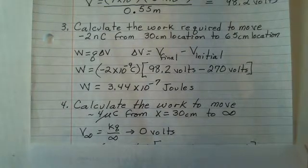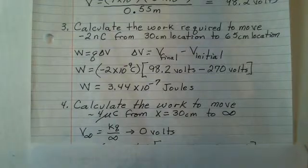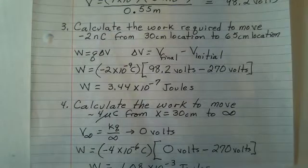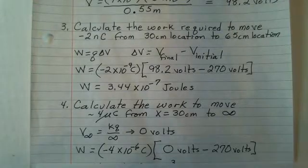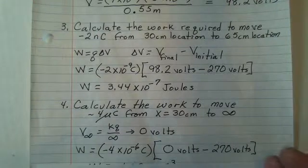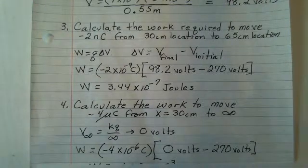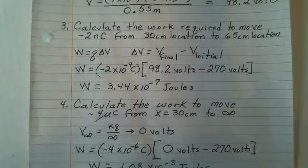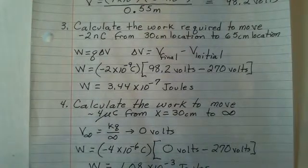The R value is infinite and when we divide by infinity, a finite number by infinity, we get 0. So here's our calculation. The Q times delta V is minus 4 times 10 to the minus 6 coulombs. Our initial potential, minus 270 is there. And our work is 1.08 times 10 to the minus 3 joules.